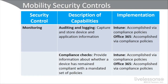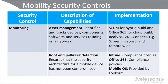Our next NIST security control is monitoring. We can use auditing and logging to capture and store device and app information — Microsoft Intune and Office 365 can accomplish this. There are also compliance checks to verify whether a device has remained compliant with mandated policies, again implemented via Intune and Office 365. For asset management, we identify and track devices, components, software, and services on a network, implemented using SCCM for hybrid, Office 365, and VNC Connect, which supports screen mirroring and remote wipe.